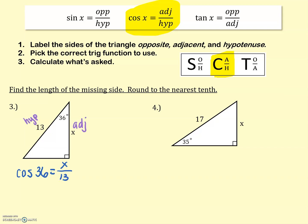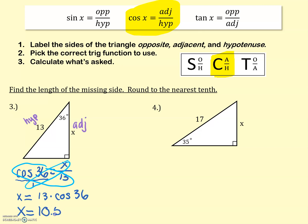Now to find x, we're going to cross multiply. Write this as a fraction — cosine of 36 over 1. So x equals 13 times the cosine of 36. If you put that in your calculator, you'll get that x equals about 10.5. The length of this adjacent side is 10.5, which makes sense because the hypotenuse is always the longest side, and 13 is longer than 10.5.